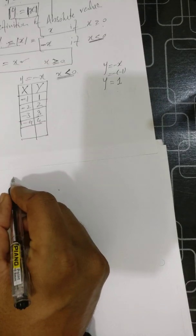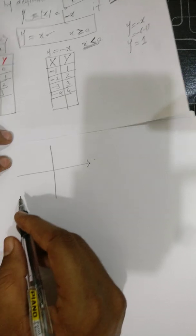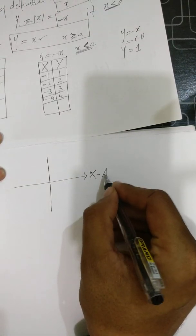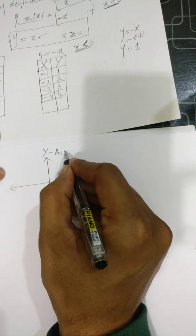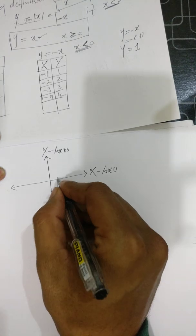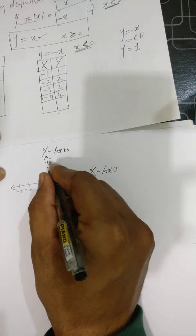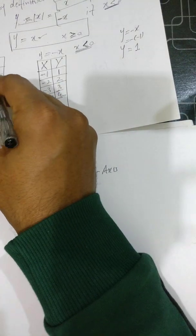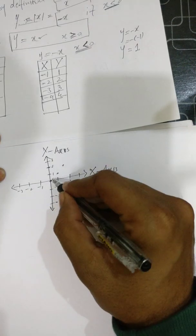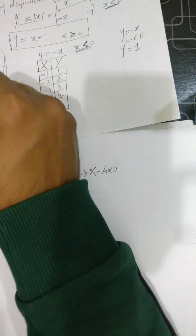The graph of the absolute value function: let's set up our axes with the y-axis and x-axis. Marking values: 1, 2, 3 and -1, -2, -3 on the x-axis, and 1, 2, 3 and -1, -2, -3 on the y-axis. For x=0 the output is 0, for x=1 the output is 1. Drawing the graph from our table, it forms a V-shape — the two parts of the definition combine to give this characteristic shape.